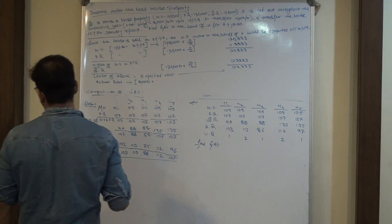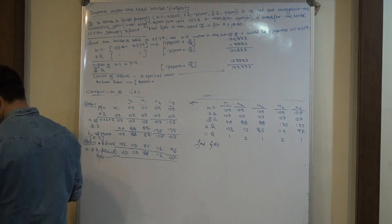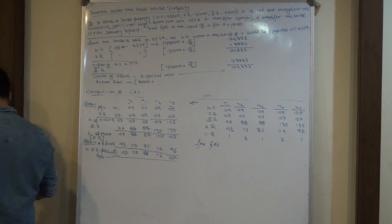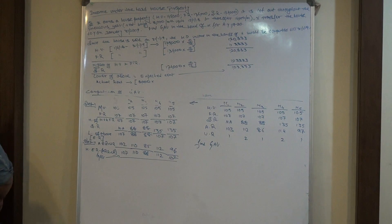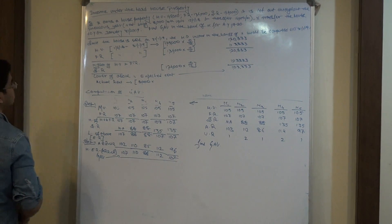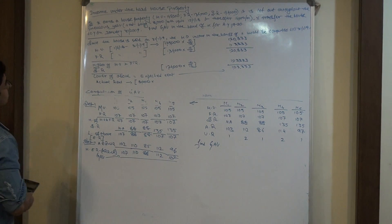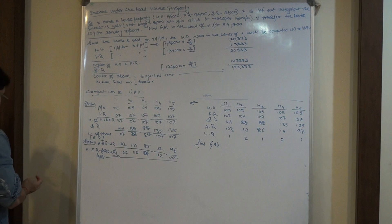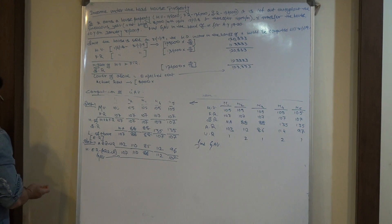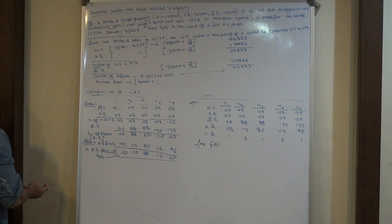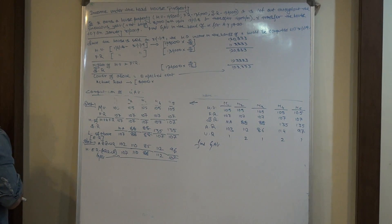Date is 15/11/2018. April, May, June, July, August, September, October — that is 7.5 months.